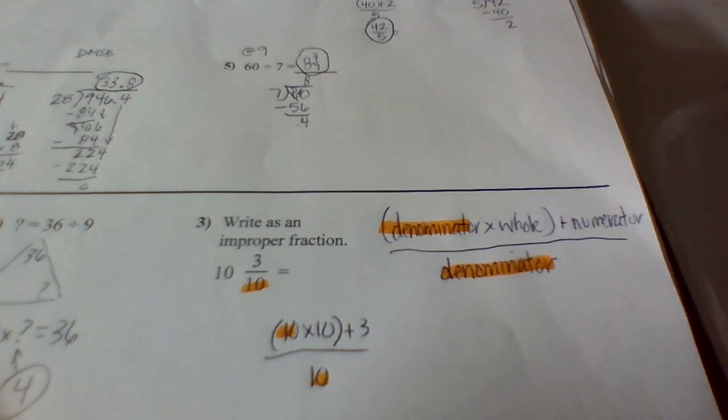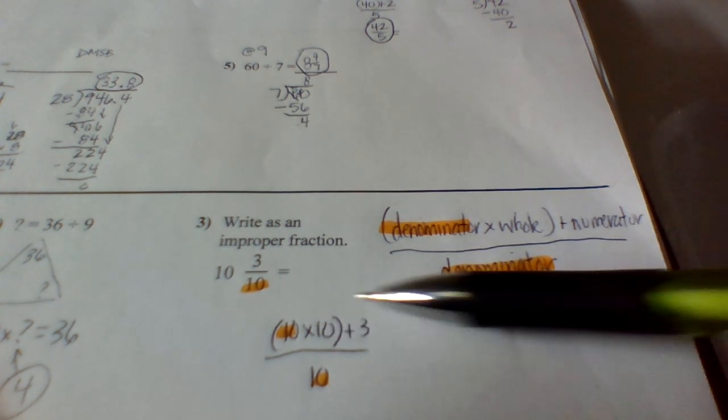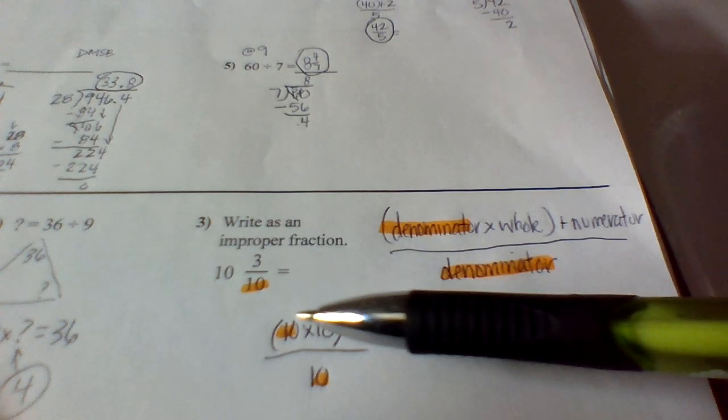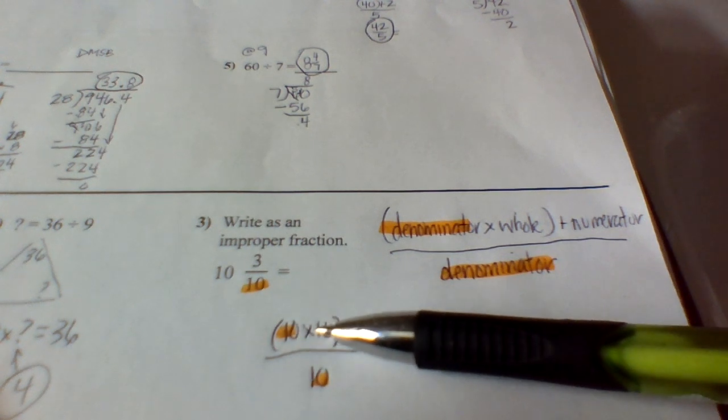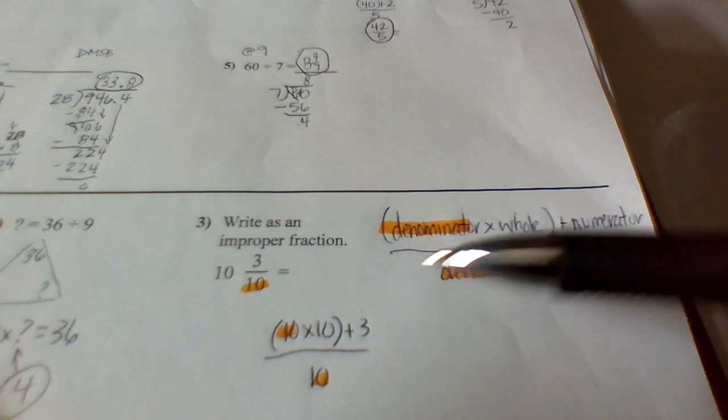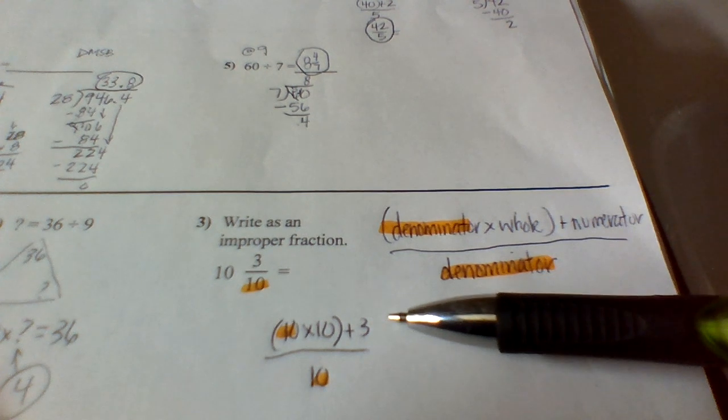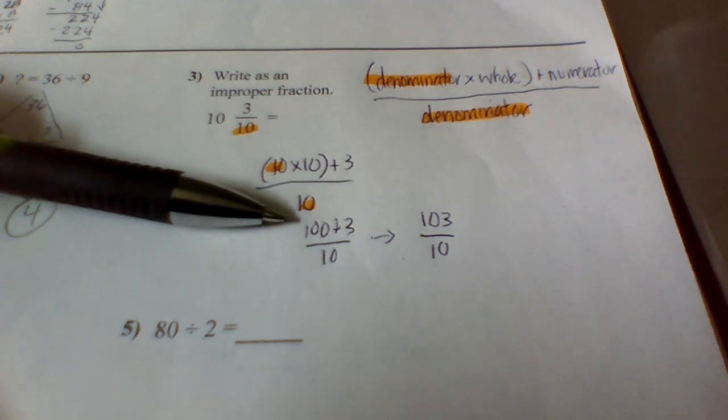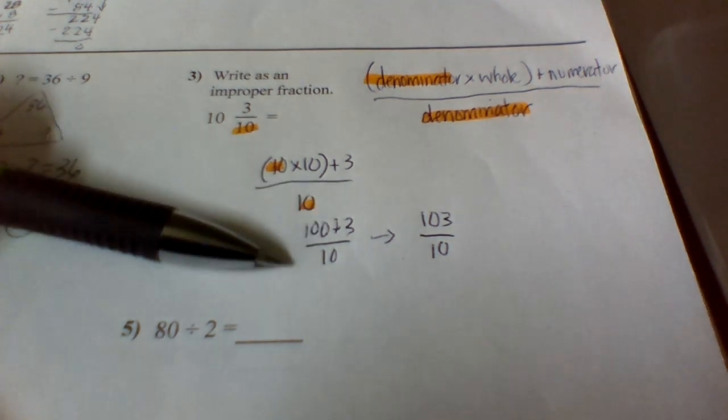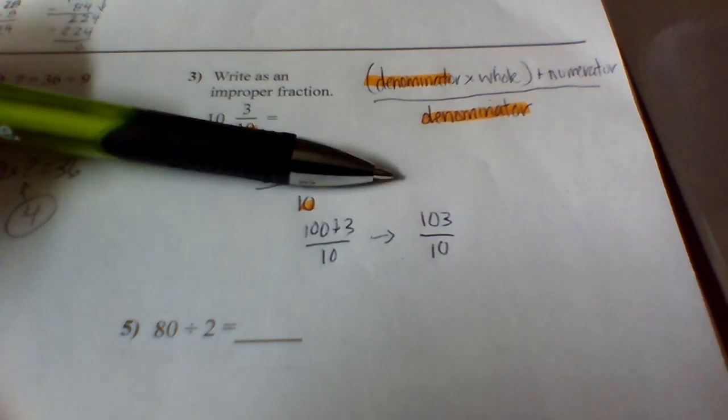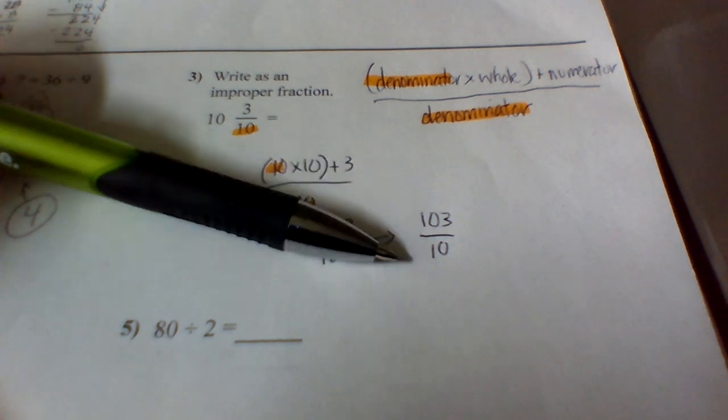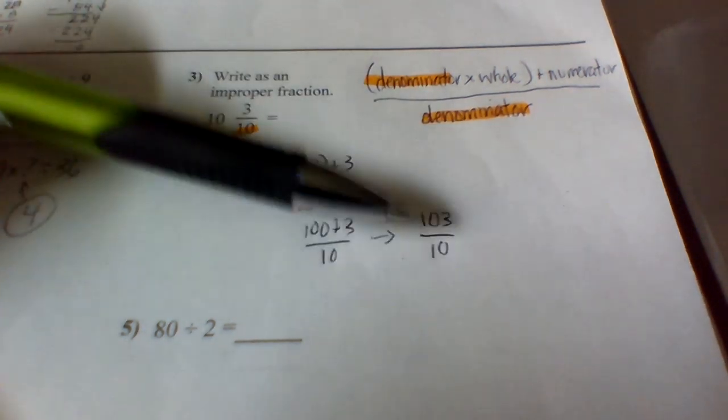To help us with this problem, I highlighted my orange denominator, so then you could see in this problem what that is. So then when I do this problem, I'm going to do my 10 times 10 first and then plus 3. So 10 times 10 is 100 plus 3. So when I do that, I get my 100 plus 3 over 10. And this would be 103 over 10. And so here's my answer. This is my improper fraction.